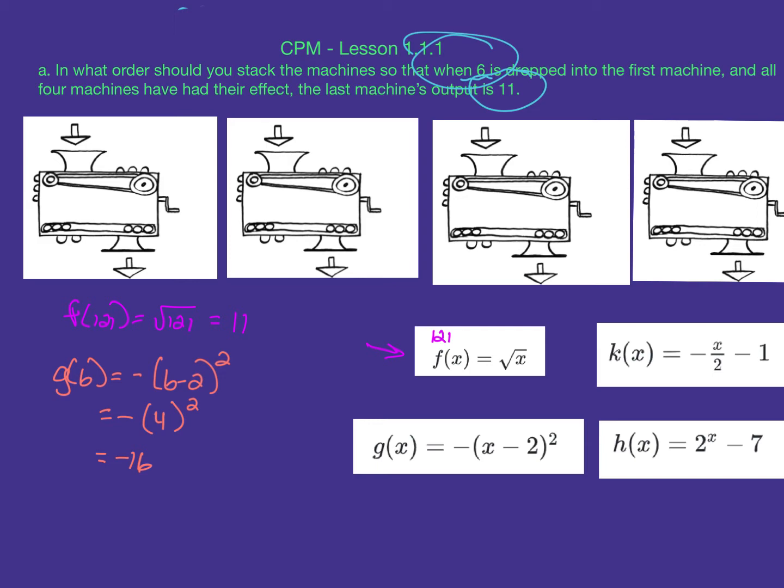I'm not going to put negative 16 into h(x) because that means doing 2 to the negative 16th, which would be a major fraction. So I'm going to try k(-16). That'll be negative negative 16 over 2 minus 1, which equals 8 because 16 divided by 2 is 8, and negative negative is positive. So 8 minus 1 equals 7.